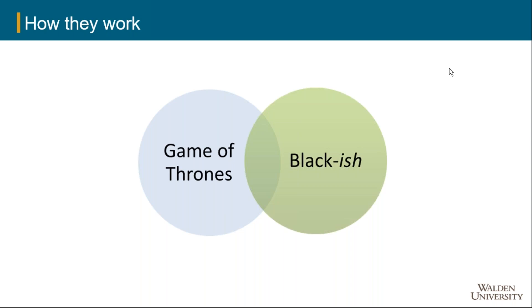NOT is a little bit trickier, because you're inevitably going to miss out on a little bit of what you're interested in. So if I'm looking at people who watch Black-ish but NOT Game of Thrones, I'm going to be missing that little chunk of overlap, because it's going to take out the people who watch both. So I'm going to get a cookie-shaped results list and miss a few people who do watch Black-ish. We use NOT, but only in very specific circumstances.